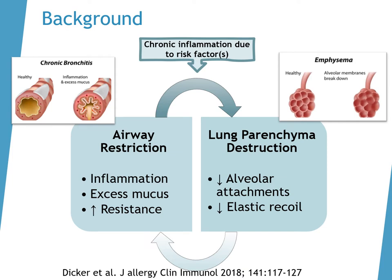This slide reviews the mechanisms related to developing COPD. COPD is actually an umbrella term for both chronic bronchitis and emphysema, and patients may have one or both. The cycle starts with initial tissue irritation and destruction due to risk factors like smoking, which leads to inflammation. Inflammation leads to excess mucus production, causing airway damage and constriction of the bronchioles — airway restriction, also called chronic bronchitis. This is the obstruction referred to in the name COPD.